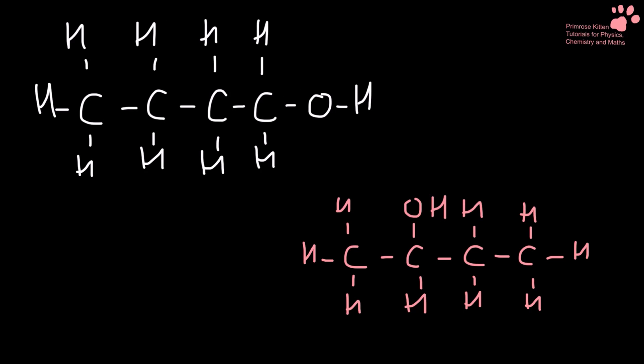Here we have four carbons. Now the alkane that has four carbons is butane. If we want to turn that into an alcohol, we need to remove the E and then put an O-L on the end. Now this is pronounced butanol. Not as one of my U11s once insisted on pronouncing it as butanol. It is pronounced butanol.